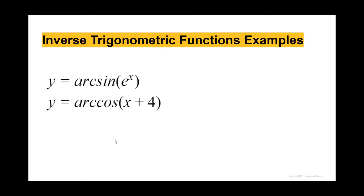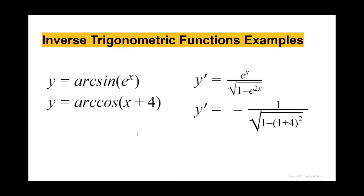We have some examples applying these. The first one is y equals arc sine of e raised to the x. The derivative equals e raised to the x divided by the square root of 1 minus e raised to the 2x. The second one is y equals arc cosine of x plus 4. The derivative equals negative 1 divided by the square root of 1 minus x plus 4 squared.